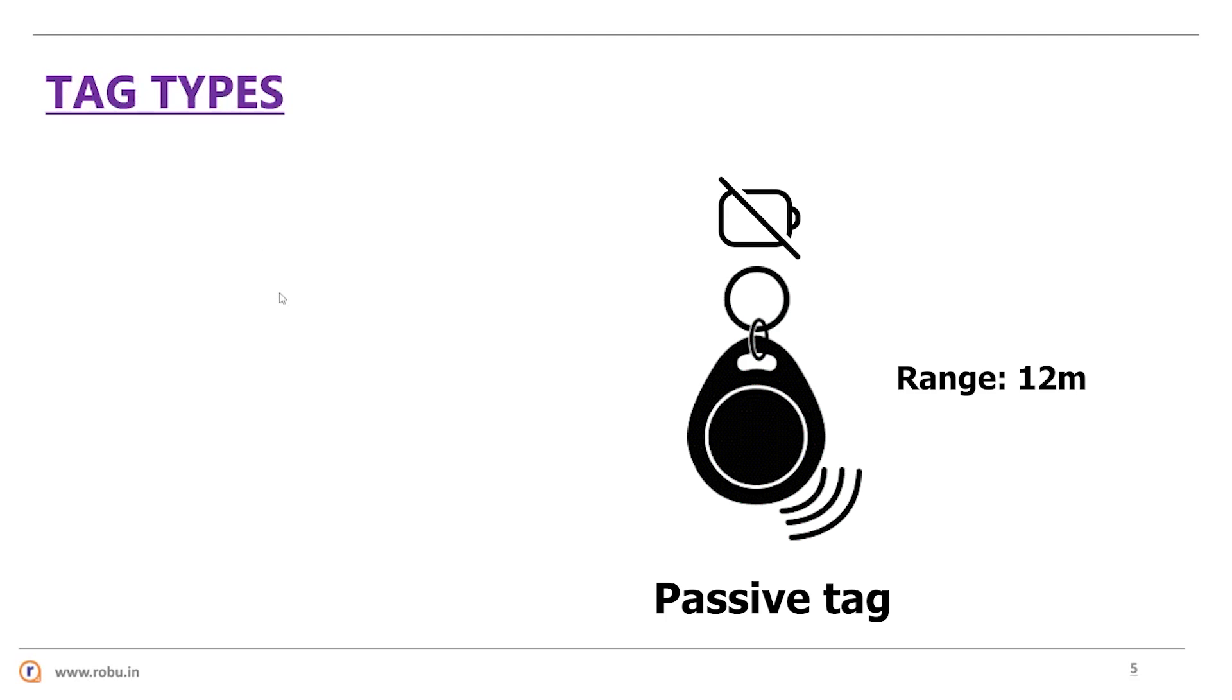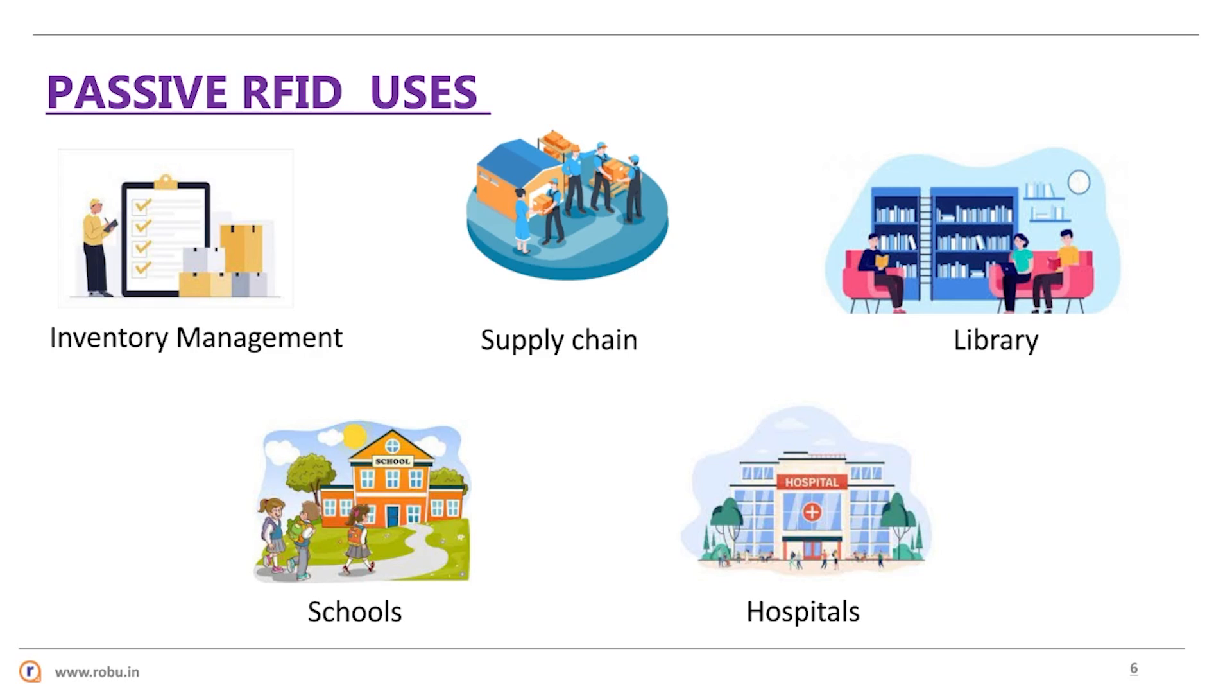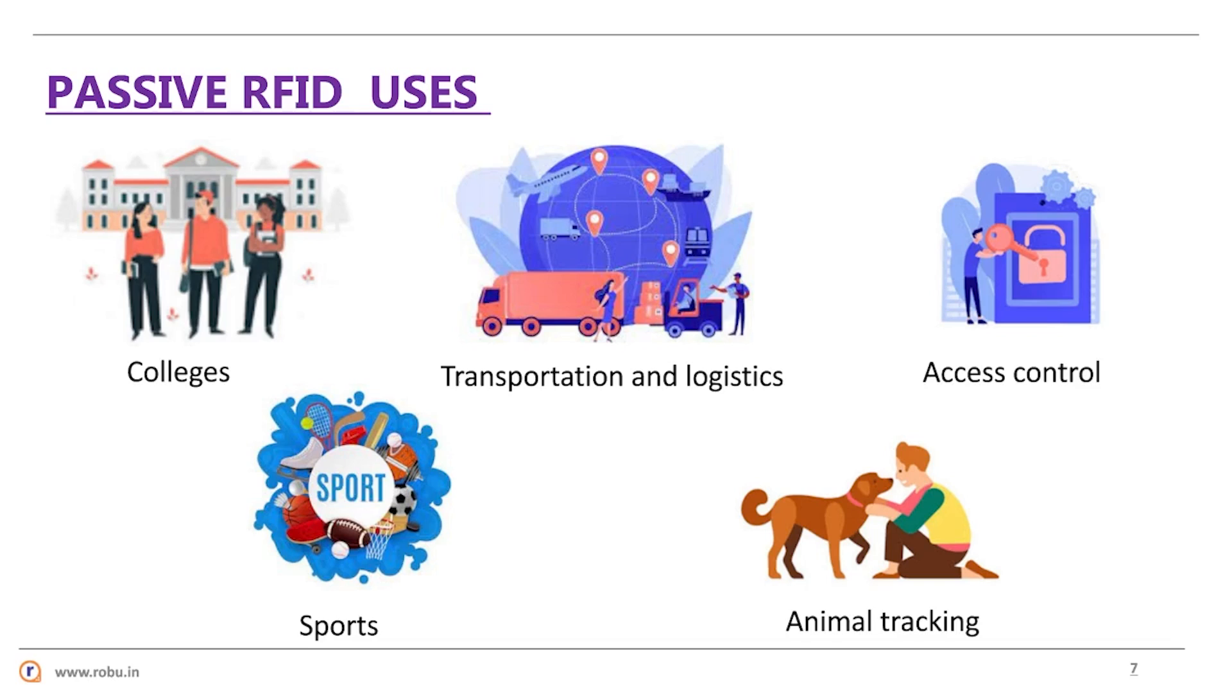Passive RFID tags are a popular and cheaper option and used in a wide range of operations, like inventory management and supply chain management, institutions, libraries, hospitals, schools and colleges, transportation and logistics, access control, sports, animal tracking, and many more.